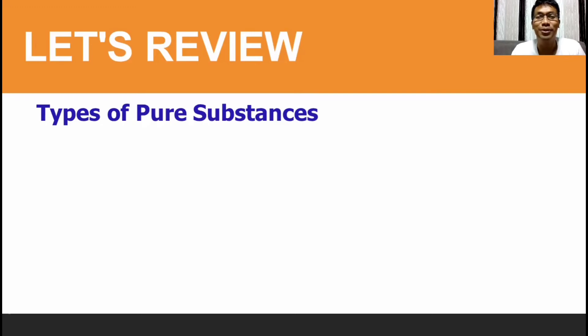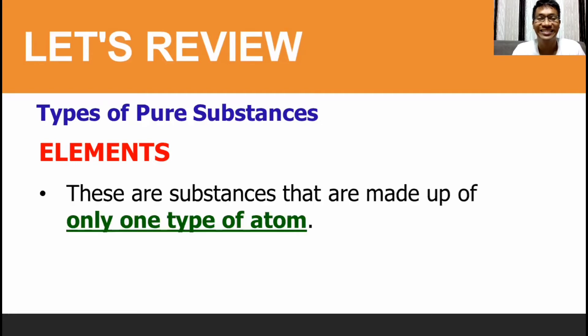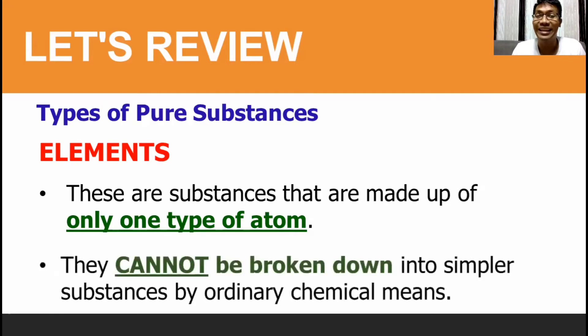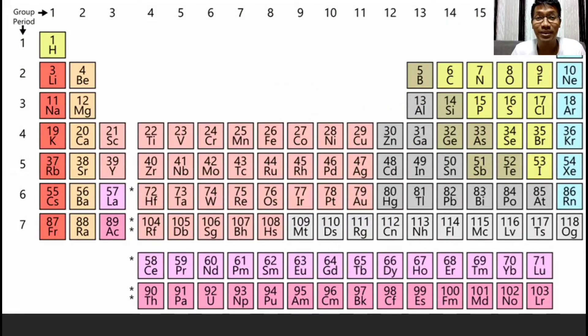In the previous teach blog again, we also talked about elements. And from that video, we learned that elements are substances that are made up of only one type of atom. Also, they cannot be broken down into simpler substances by ordinary chemical means. To know all the elements, we have this tool called periodic table of elements.